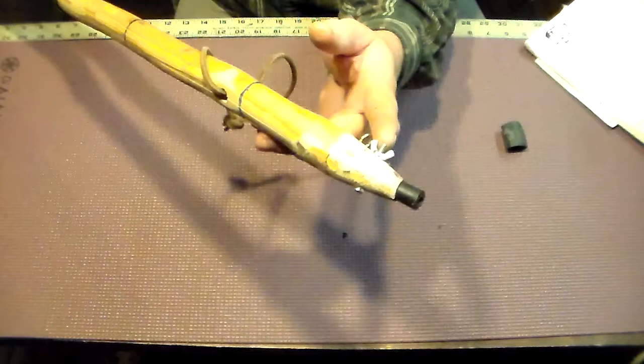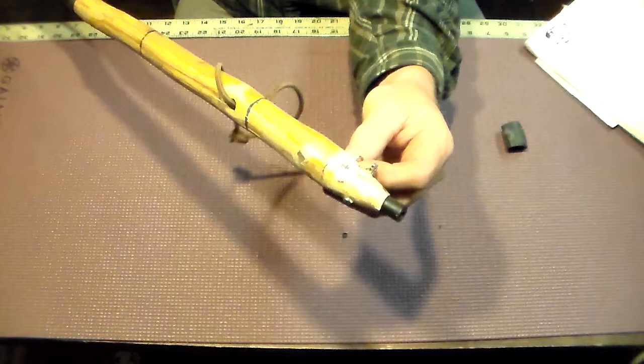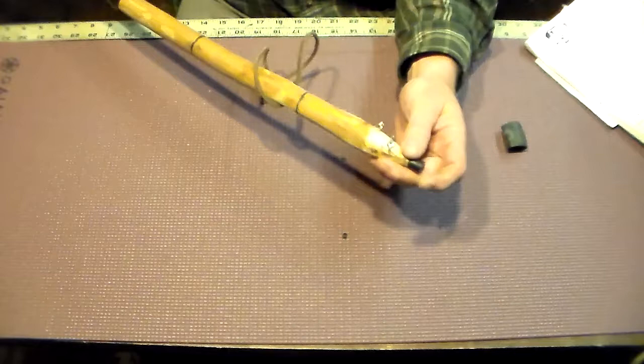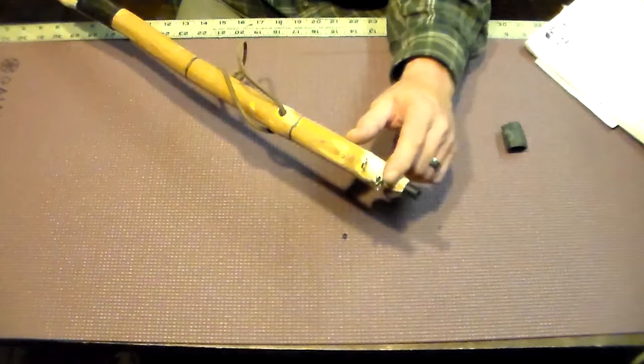On this one I got a stove bolt with a wing nut that holds my frog gig on. In my kit, my possibles pouch, I carry another wing nut and bolt in case I lose this one. This here's an eyelet.